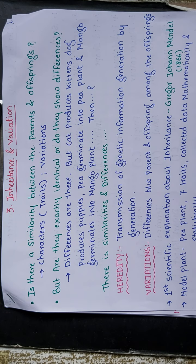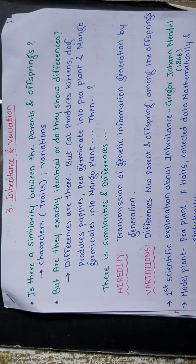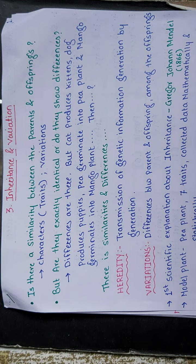A question arises: is there any similarity between parents and offspring? Yes, there is similarity — that is the character or trait. And there is also variation between parents and offspring. Another question: are they exactly identical, or do they show differences? Yes, there are differences.